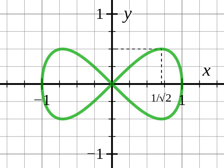An English translation of Newton's original statement is: There is no oval figure whose area, cut off by right lines at pleasure, can be universally found by means of equations of any number of finite terms and dimensions.